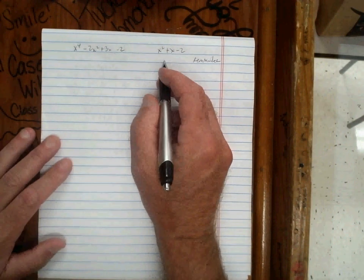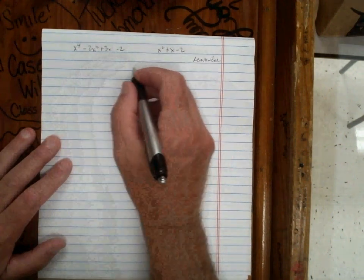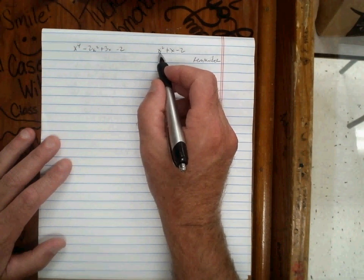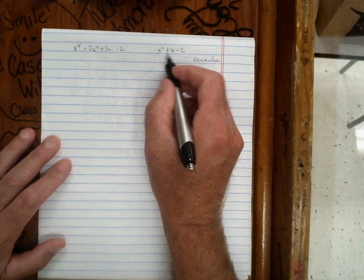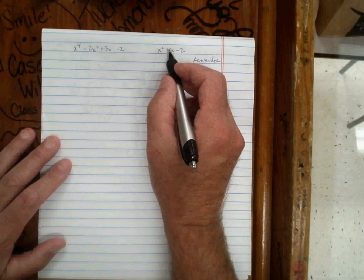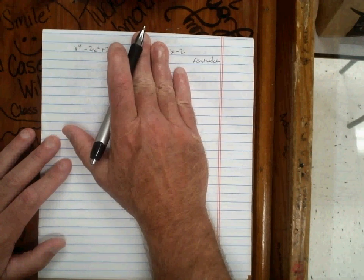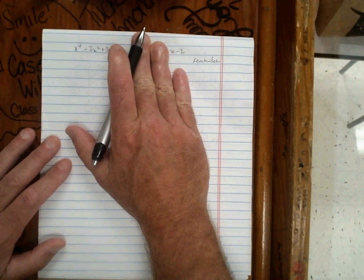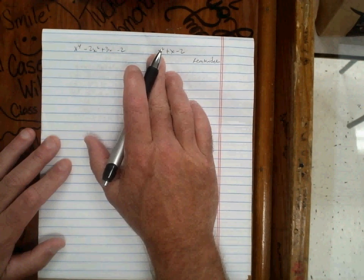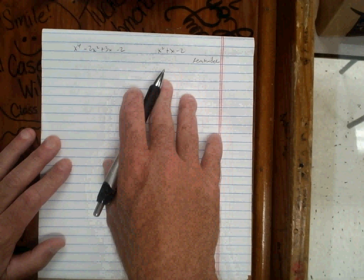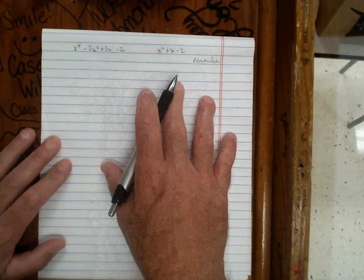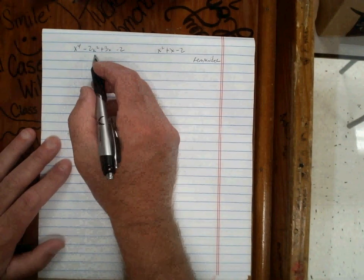We have to do long division. We can't use synthetic division because this is not a linear term — even though the coefficient is 1, it's not linear. If we were dividing by x minus 2 we could use synthetic division, but since we're dividing by x squared plus x minus 2 we can't use synthetic division in its current form. So we're going to use long division.